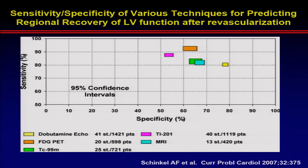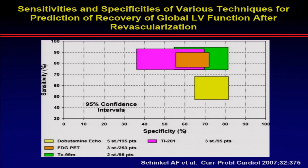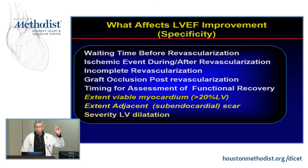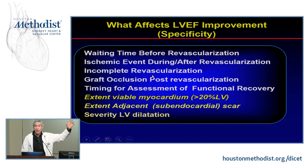Looking at regional improvement of LV function, most techniques have very high sensitivity. Echocardiography has slightly less sensitivity than other techniques but improved specificity. For global improvement in function, sensitivity is about 80 to 90% with modest specificity improvements for echocardiography. What affects specificity depends heavily on the outcome being measured: waiting time before revascularization, the ischemic event, incomplete revascularization — which may prevent EF improvement even if tissue is viable — graft occlusion post-revascularization, and timing of the second assessment.